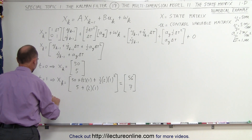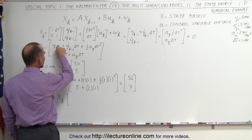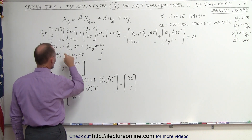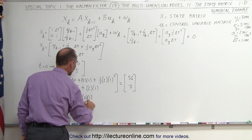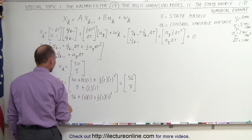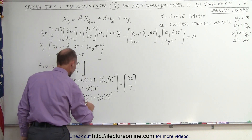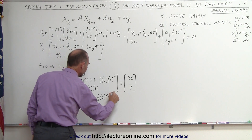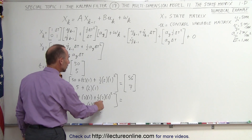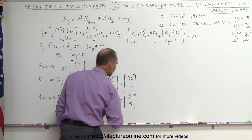When time is equal to 2, the new matrix will look as follows. We start with the previous position, which is 56, plus the previous velocity (now 7) times delta T (1), plus one half times acceleration times delta T quantity squared. For velocity, we have the previous velocity of 7, plus the acceleration (2) times delta T (1). Our new position: 56 plus 7 is 63, plus 1 is 64. Our new velocity: 7 plus 2 is 9.